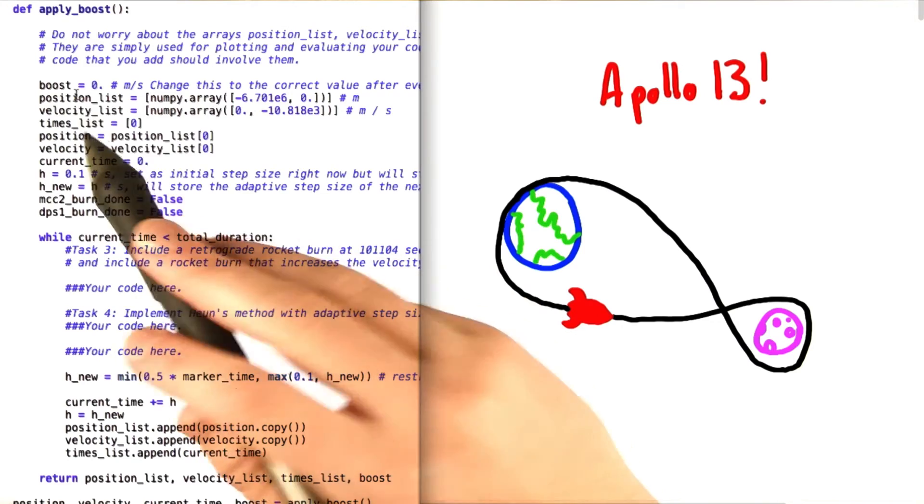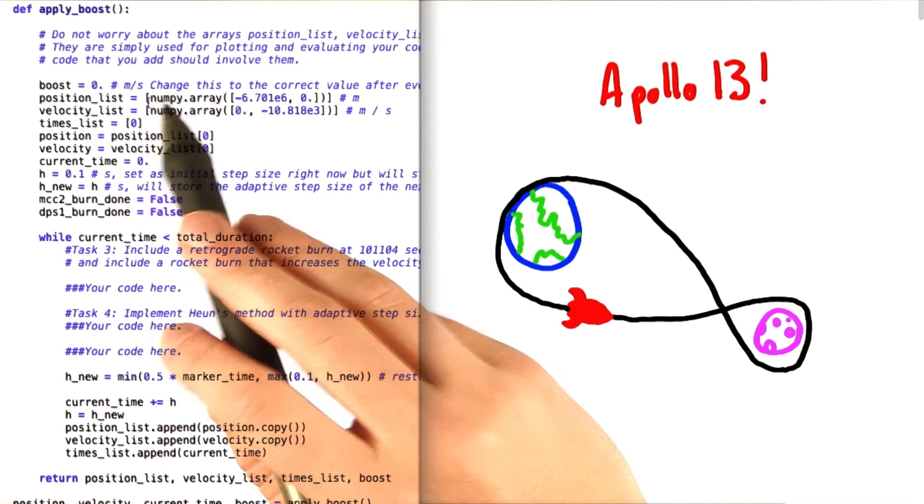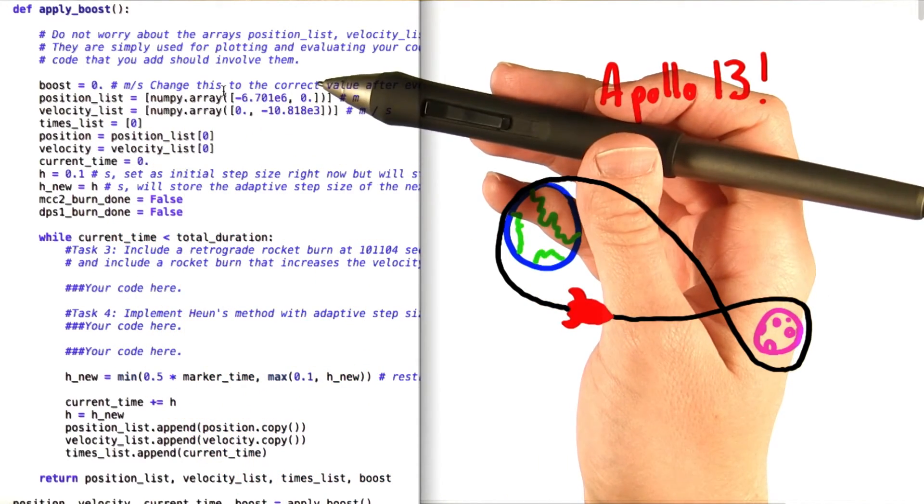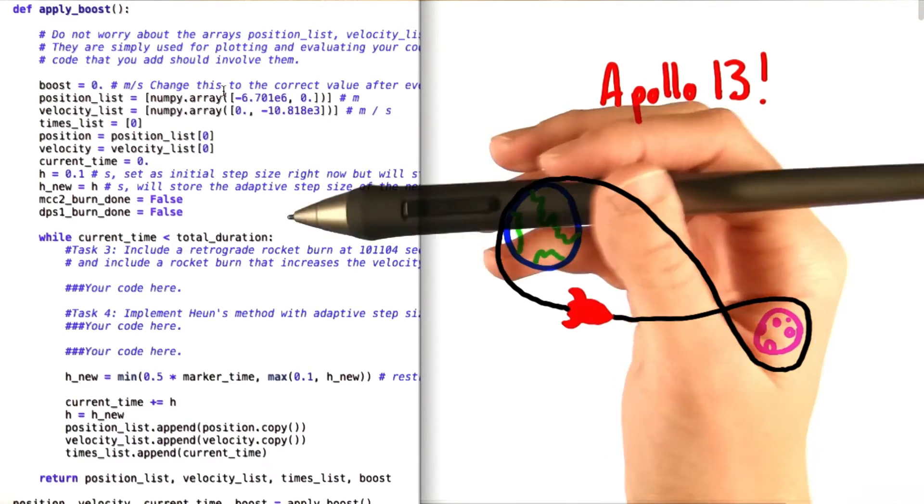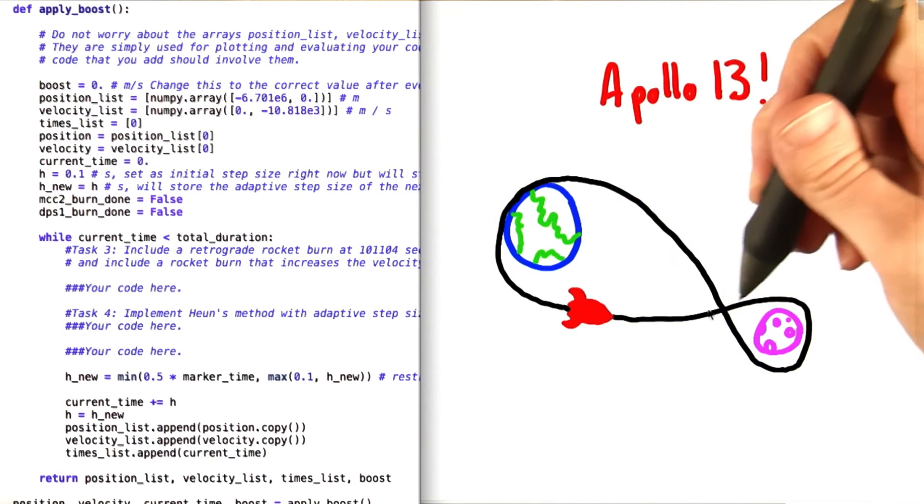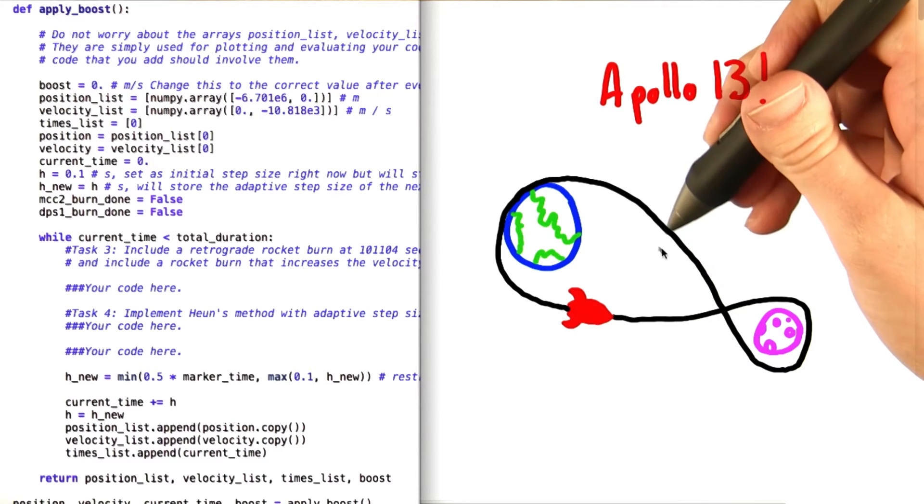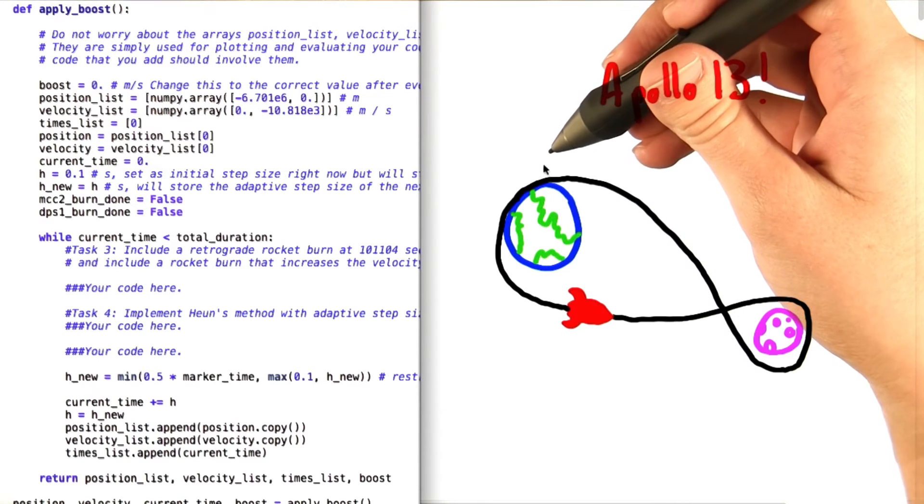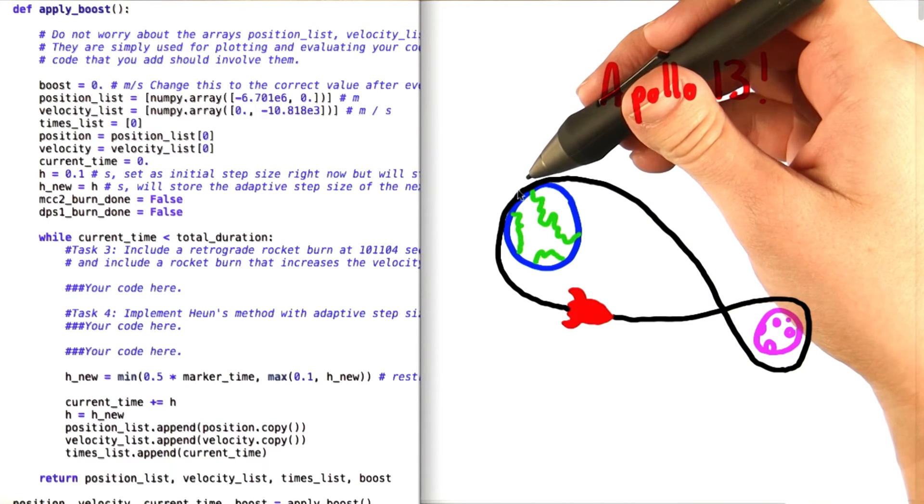We've given you just an initial value of 0, but we've also given you some other values to try out. So try plugging each of these in and see what happens. Remember that our goal is to get the spaceship all the way around the moon and then come back to the earth and just touch the place where it initially took off.